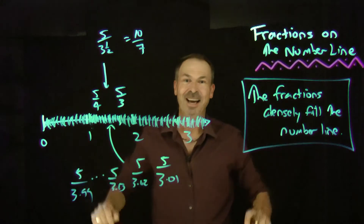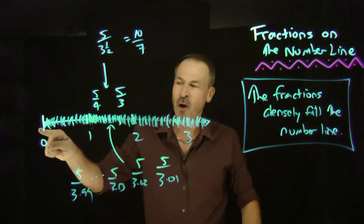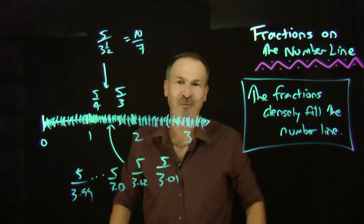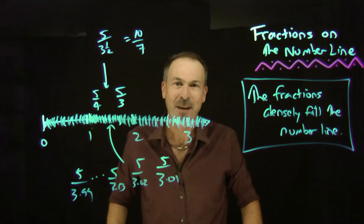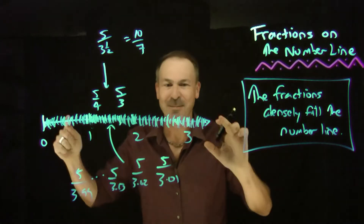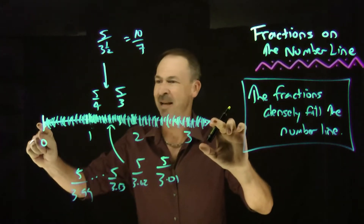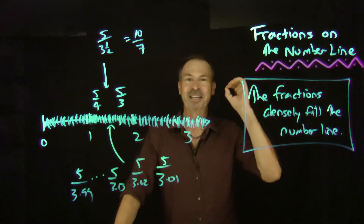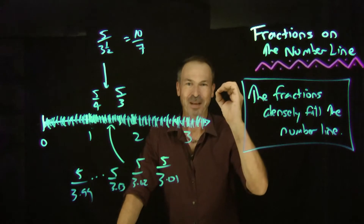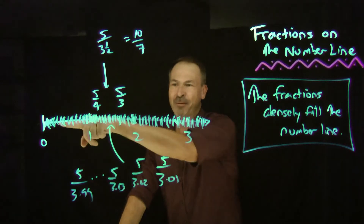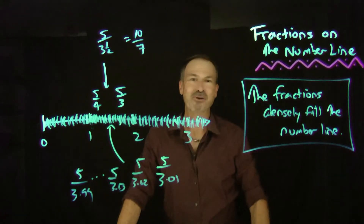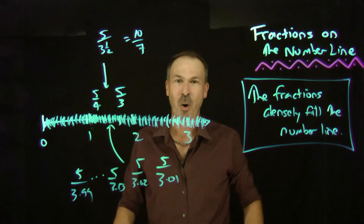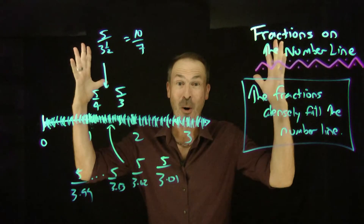So it looks like everything is taken up — all the space is taken up by fractions. Yet I claim the total amount of space taken up by the fractions on the number line, despite what my eyes are showing me here, is actually zero. I claim the fractions are taking up no space at all on this number line.